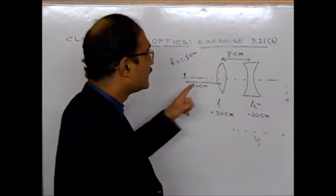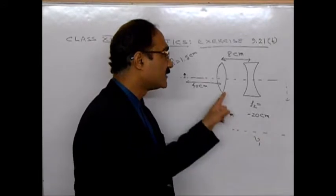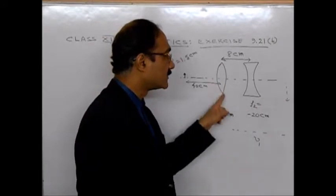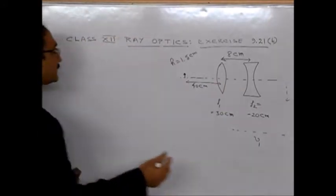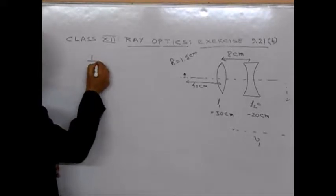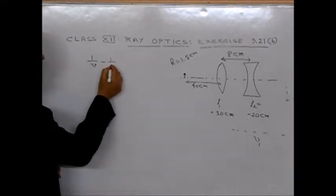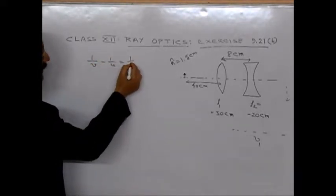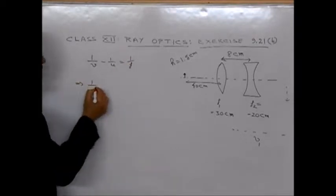This is the technique to be followed here. First, what you do? You find the position of the image for this convex lens. Then, you take that image to be the object for this concave lens. First, let's find V1, the image distance for convex lens.